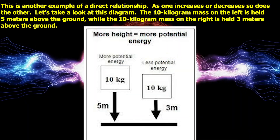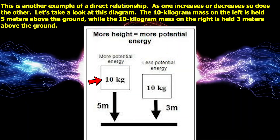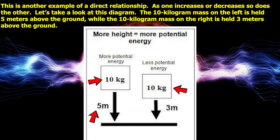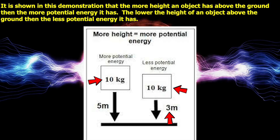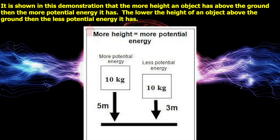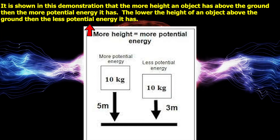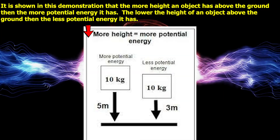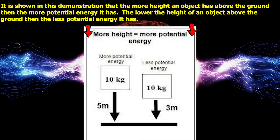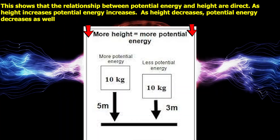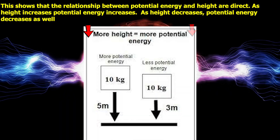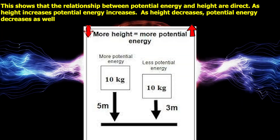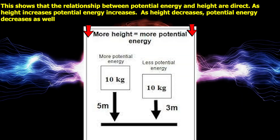Let's take a look at this next diagram. The 10 kilogram mass on the left is held 5 meters above the ground, while the 10 kilogram mass on the right is held 3 meters above the ground. The demonstration shows that the more height an object has above the ground, the more potential energy it has. The lower the height of an object above the ground, the less potential energy it has. This shows that the relationship between potential energy and height is also direct: as height increases, potential energy increases, and as height decreases, potential energy decreases.